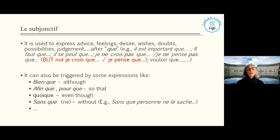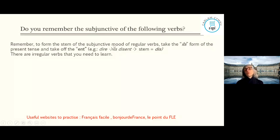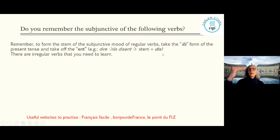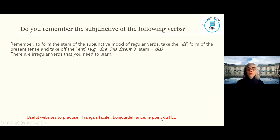Subjunctive is also triggered by conjunctions: 'bien que' (although), 'afin que/pour que' (so that), 'quoi que' (even though), 'sans que' (without) — note that 'sans que' requires a double negation: 'sans que personne ne le sache' (without anyone knowing). These four are perhaps the most common ones to use in essays and oral work. To form the subjunctive of regular verbs, take the 'ils' form of the present tense and remove the -ENT ending to get the stem.